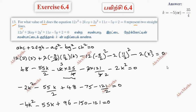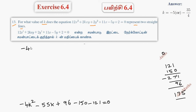So minus 4K squared minus 55K plus 96 minus 150 minus 121 equal to 0. Adding 121 and 150 gives 271, subtracting 96 gives 175. So the final equation is 4K squared minus 55K minus 175 equal to 0. Throughout sign change: 4K squared plus 55K plus 175 equal to 0.